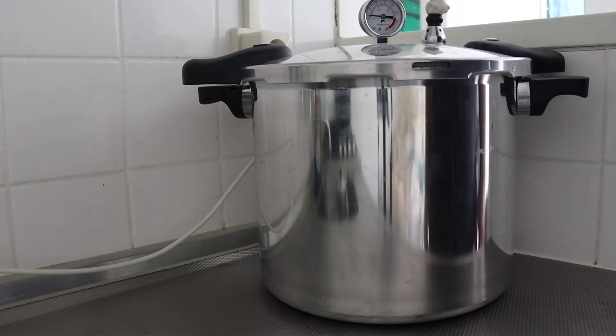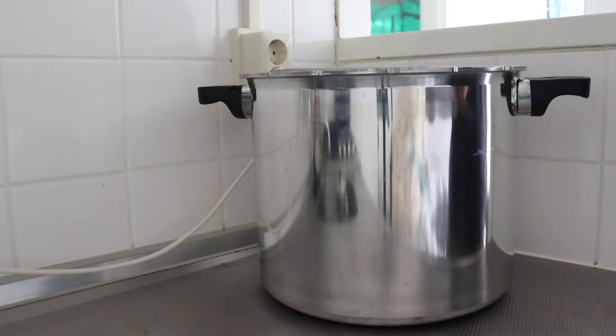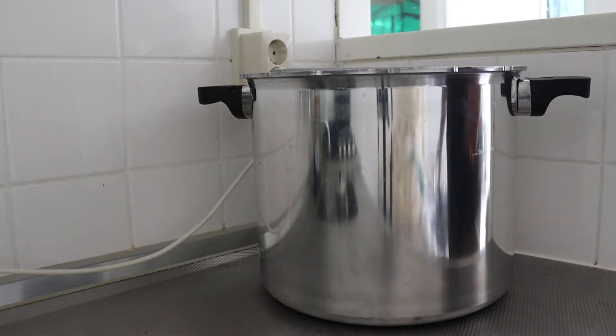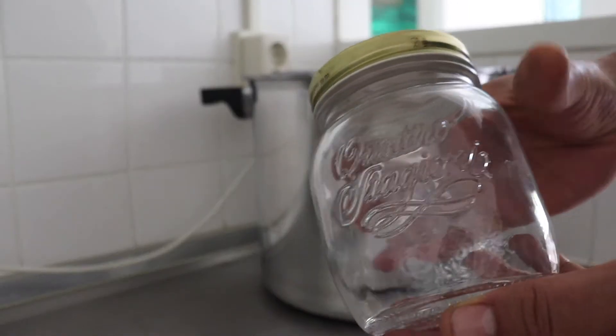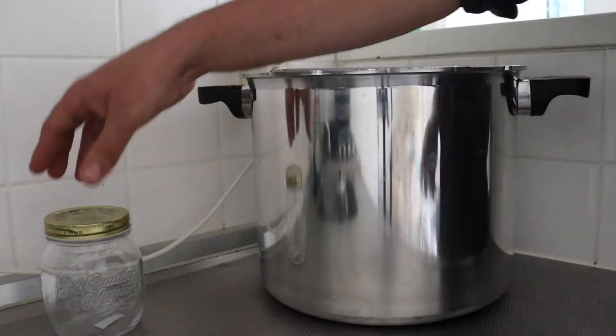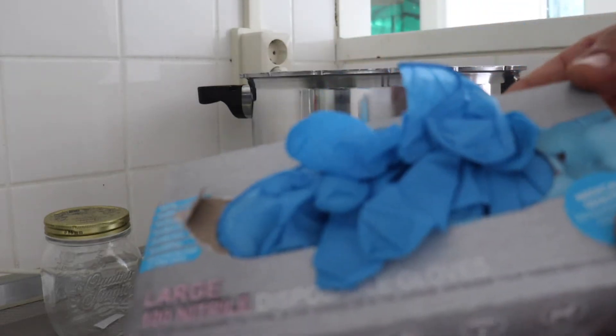Okay, so here we see a big pressure cooker. We're about to go through the things we need to make this liquid culture. Alright. Pressure cooker number one. A jar, obviously. Keep the liquid in the jar. Can't really keep it anywhere else.